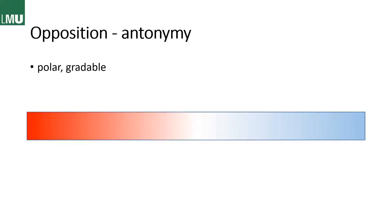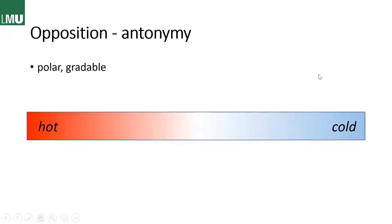Another semantic relation we have to talk about is antonymy — and antonymy refers to polar and gradable words. So not absolutes, but gradable. For example, 'hot' and 'cold' are polar but not absolute — something can be hot, but something else can be even hotter or colder. It's variable, and that's what makes it gradable.